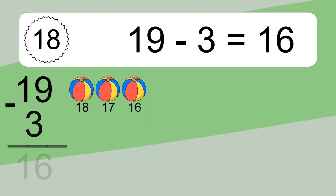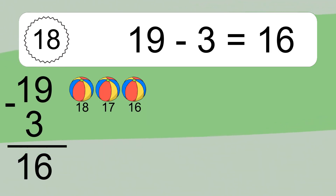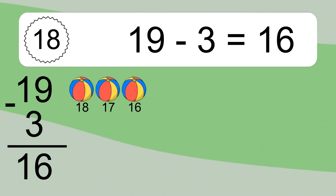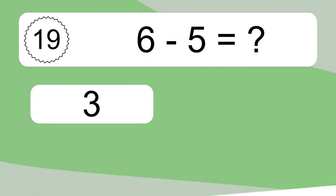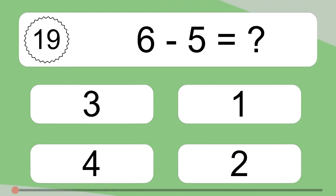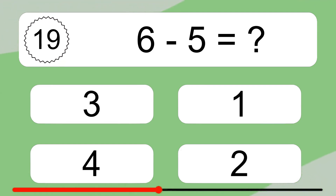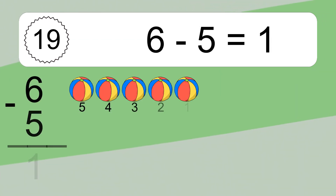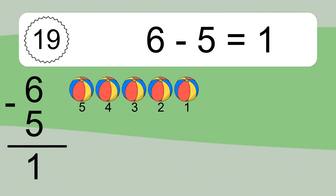19 minus 3 equals what? 19 minus 3 equals 16. Let's count it: 18, 17, 16. 6 minus 5 equals what? 6 minus 5 equals 1. Let's count it: 5, 4, 3, 2, 1.